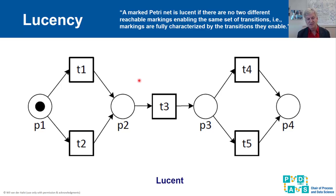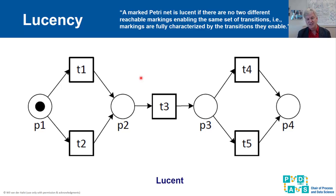Let's look at the property of lucency. I mentioned liveness earlier, but I would like to use a weaker, more reasonable property from an application perspective. The requirement is that if there are two different reachable markings, they cannot enable exactly the same set of transitions. So if two markings have the same set of enabled transitions, these two markings must be identical. This is an example of a net that has that property — it is lucent.